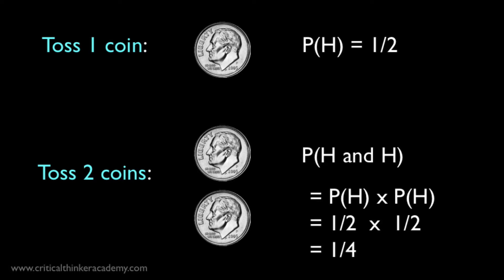In this case, if we multiply the probabilities of the two independent events, we get the right answer. One half times one half equals one quarter. There's a 25% chance of both coins landing heads.